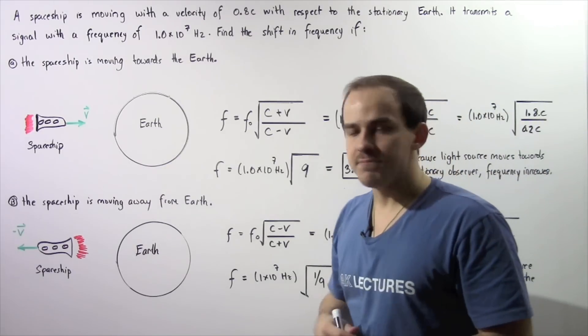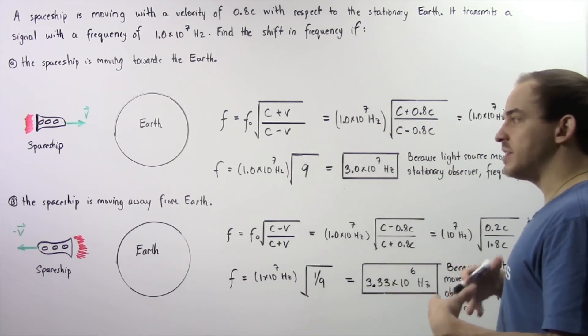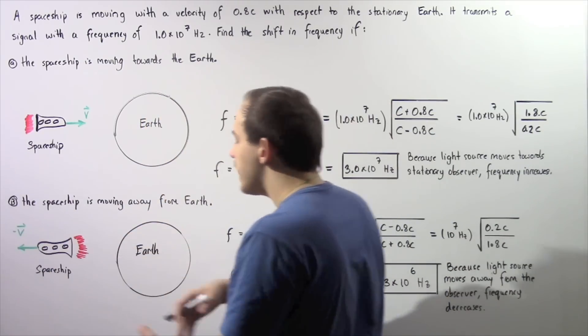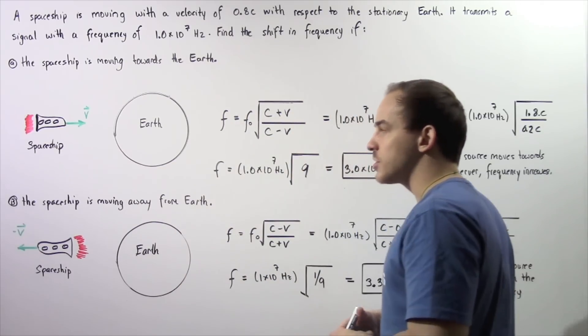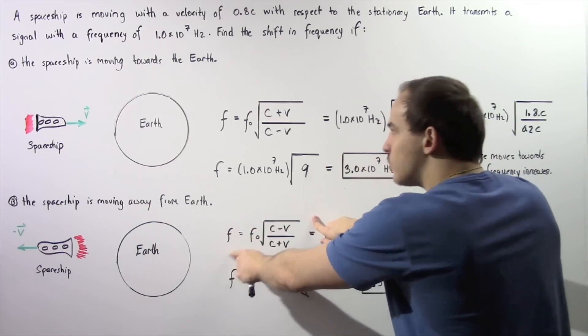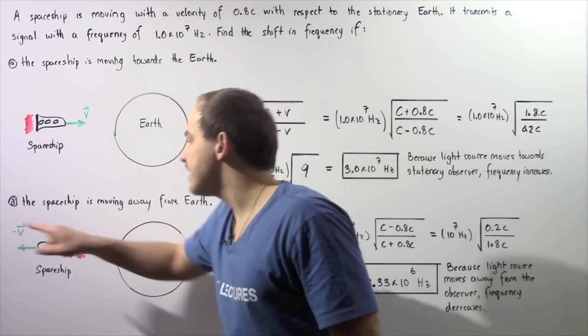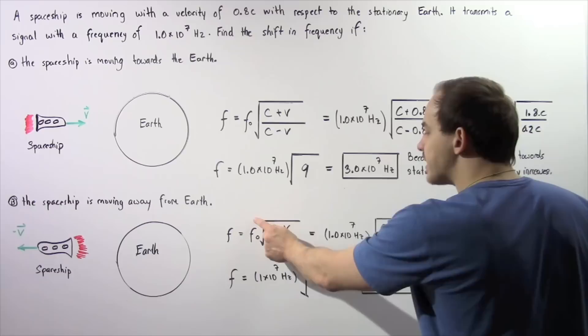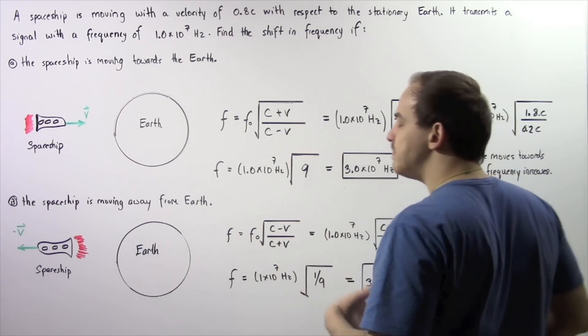Now let's move on to part B. In part B, we have the opposite situation where our light source, the spaceship, is moving away from the stationary observer, from the stationary Earth. That means instead of using this equation, we use this equation where we replace v with negative v. So this becomes f equals f0 multiplied by the square root of c minus v divided by c plus v.